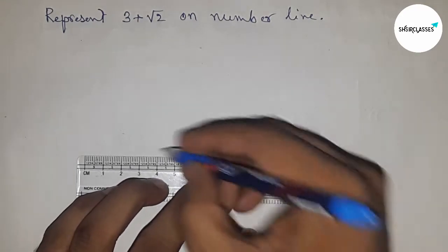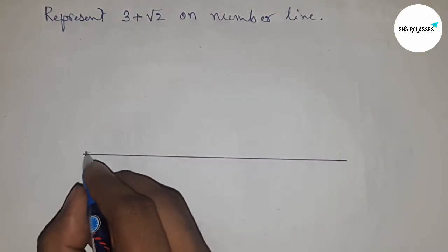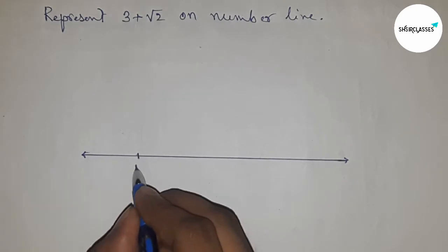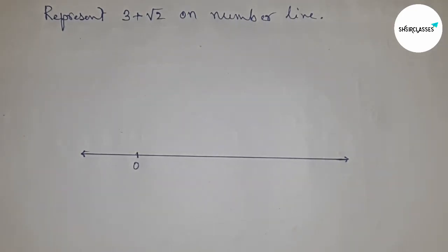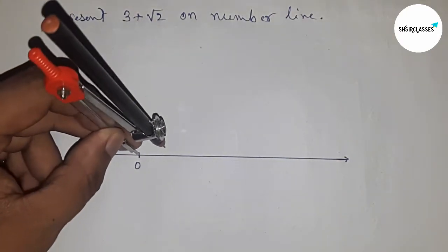First of all, drawing a line of any length here. Drawing a line and mark the ends with arrows, and it represents the number line. This is the starting number zero.